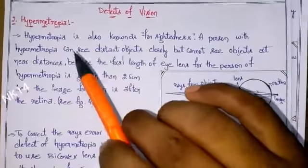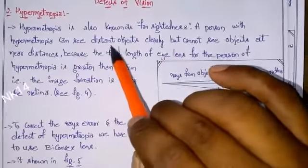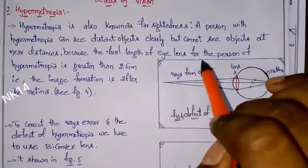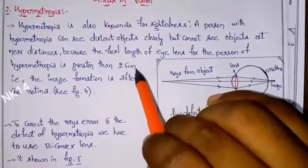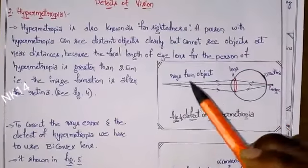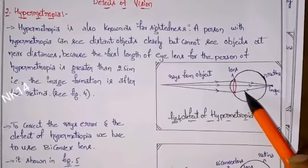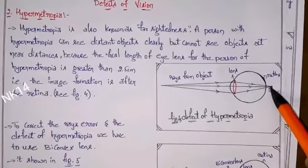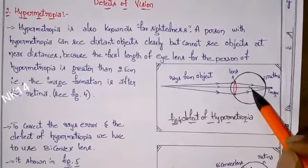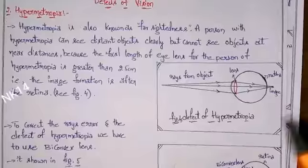The second defect is hypermetropia, which is the exact reverse of myopia. It is also known as farsightedness. A person with hypermetropia can see distant objects clearly but cannot see objects at near distance. The focal length of the eye lens for such a person is greater than 2.5 centimeters, meaning the image forms after the retina — the exact opposite of myopia.